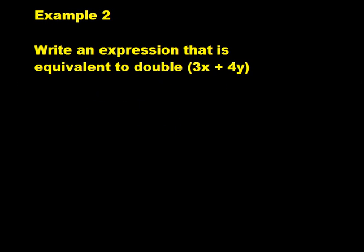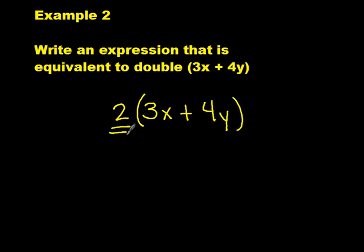Example 2. Write an expression that is equivalent to double 3x plus 4y. How can we rewrite the double expression? Double is the same as multiplying by 2, so we can rewrite the expression as 2 times (3x plus 4y). This expression is in factored form. Now, let's start this problem the same way we started the first example.